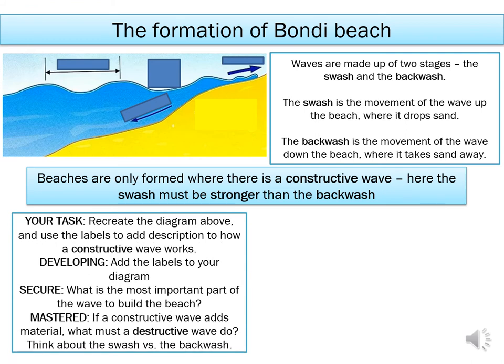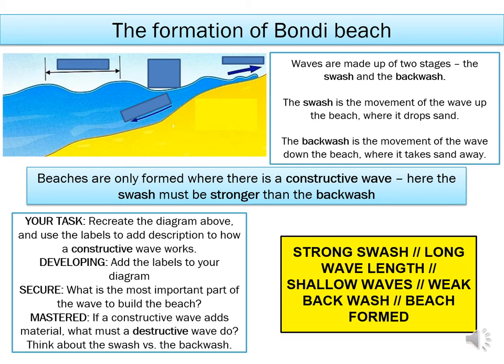Now have a go at recreating this diagram. Make sure you have the arrows and leave space to write some words above each arrow. There are some labels in the yellow box — add these to the correct part of your diagram. For example, the arrow going up the beach is the swash, so you would write 'swash' there because it is a constructive wave. If you are working at grades 5 to 6, try to pick the most important part of the wave that builds the beach — the crucial bit without which a beach would not form. And if you're working at grade 7 or above, think about what a destructive wave must do if a constructive wave adds material. Think about swash and backwash and how strong they might be for each wave.